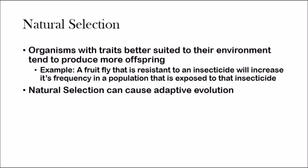Here's a review on what natural selection is. Natural selection is when organisms with traits better suited to their environment tend to produce more offspring. For example, a fruit fly which is resistant to an insecticide will increase its frequency in a population that is exposed to an insecticide. The fruit flies which are resistant will reproduce and survive, and the fruit flies which are not resistant will die off and not reproduce as much.